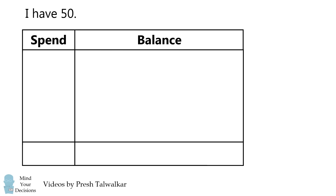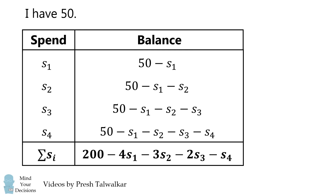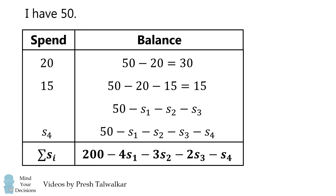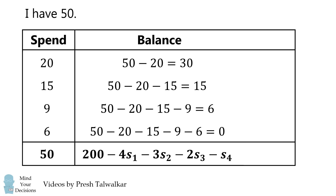Let's think about this problem a little bit more abstractly. Let's suppose we spend S1 — our balance will be 50 minus S1. If we then spend S2, we have a balance of 50 minus S1 minus S2. If we then spend S3, we subtract S3 from the balance. We then have S4 and subtract that. The total amount in the spending column will be the sum of these spending amounts. The total amount in the balance column will be this function: 200 minus 4 times S1, minus 3 times S2, minus 2 times S3, minus S4. If we put in the amounts from the original problem, the total amount in the spending column will be 50, and when we evaluate the balance column function, we get a result of 51.